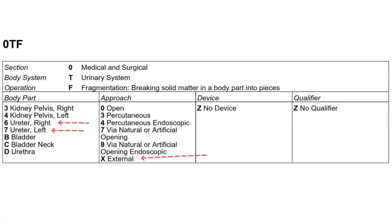The corresponding table shows: Section — Medical and Surgical; Body System — Urinary System; Root Operation — Fragmentation. For the body part, since there is no bilateral value for the ureters, we code separately for the left ureter and the right ureter, meaning there will be two codes for this procedure. The approach is External, since shock waves are applied from outside the body. The sixth character is Z — no device, and the seventh character is Z — no qualifier.